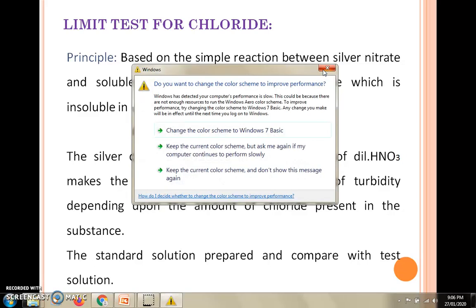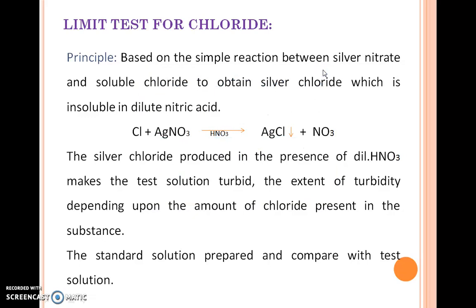Here is the reaction involved in this. The silver chloride produced in the presence of dilute HNO3 makes the test solution turbid. The extent of turbidity depends upon the amount of chloride present in the substance. A standard solution is prepared and compared with the test solution — this is a comparison method.